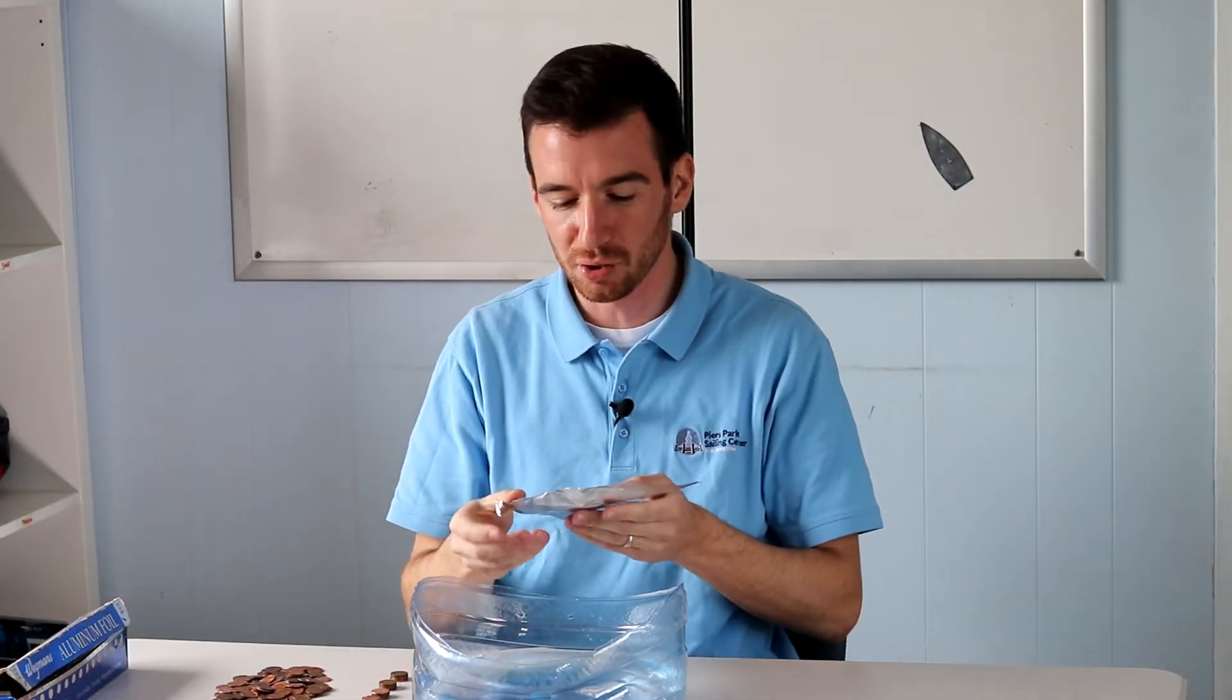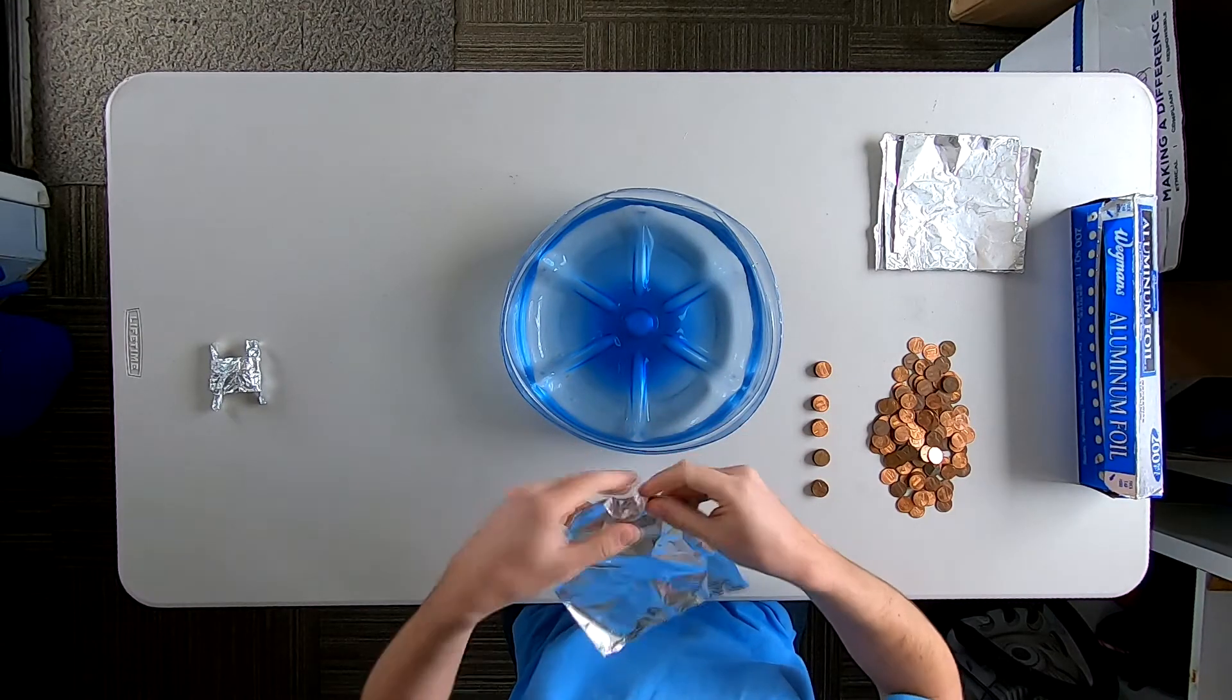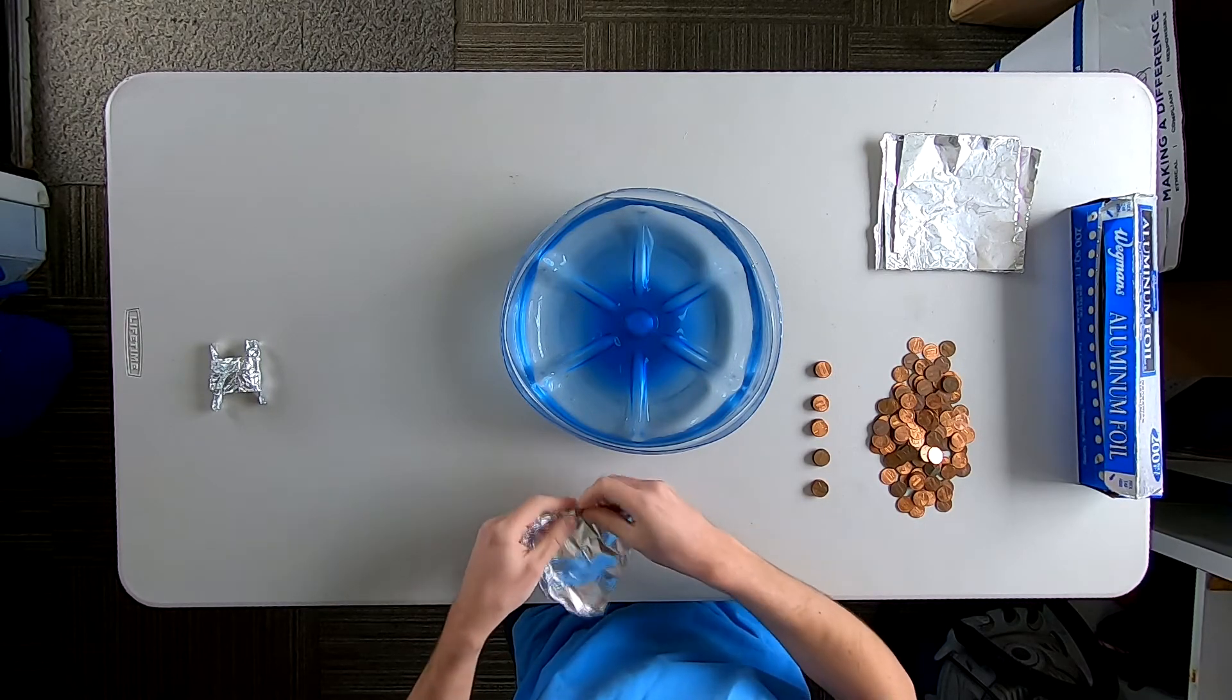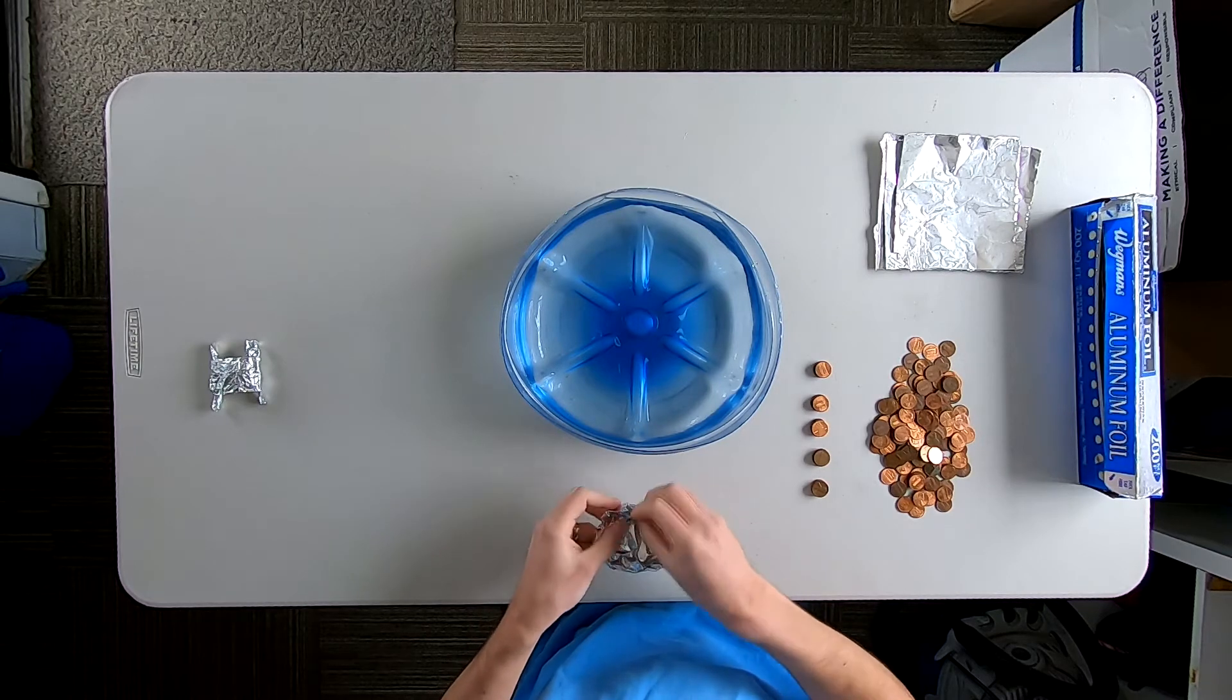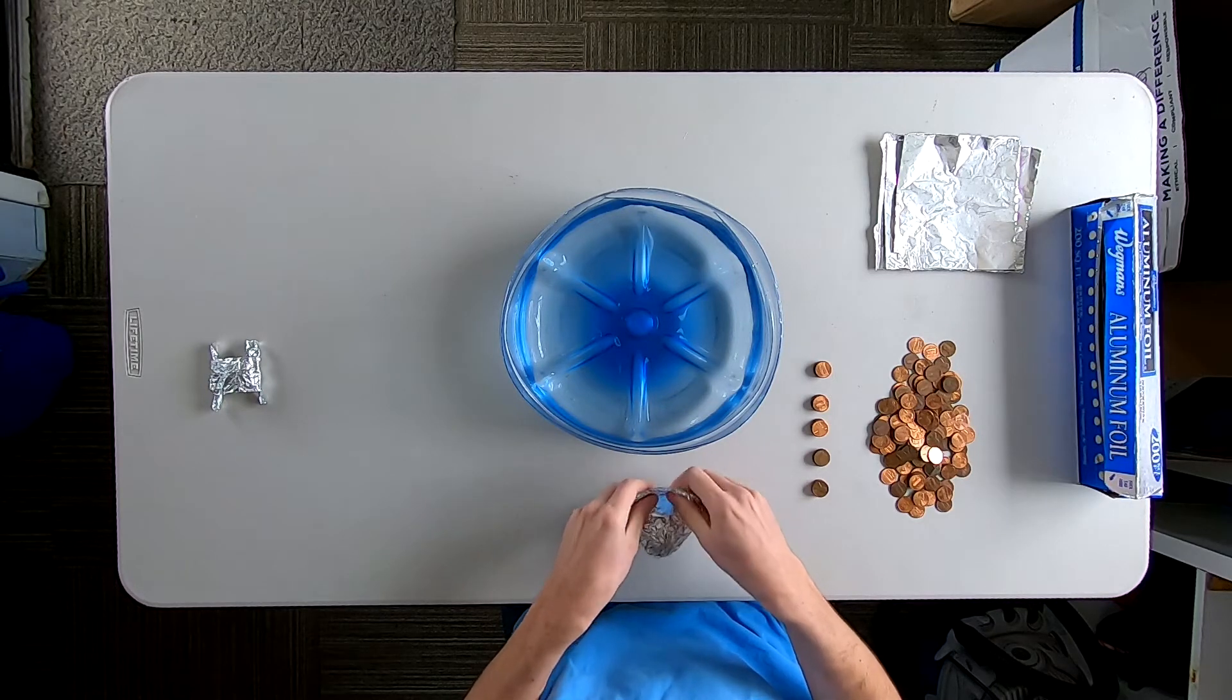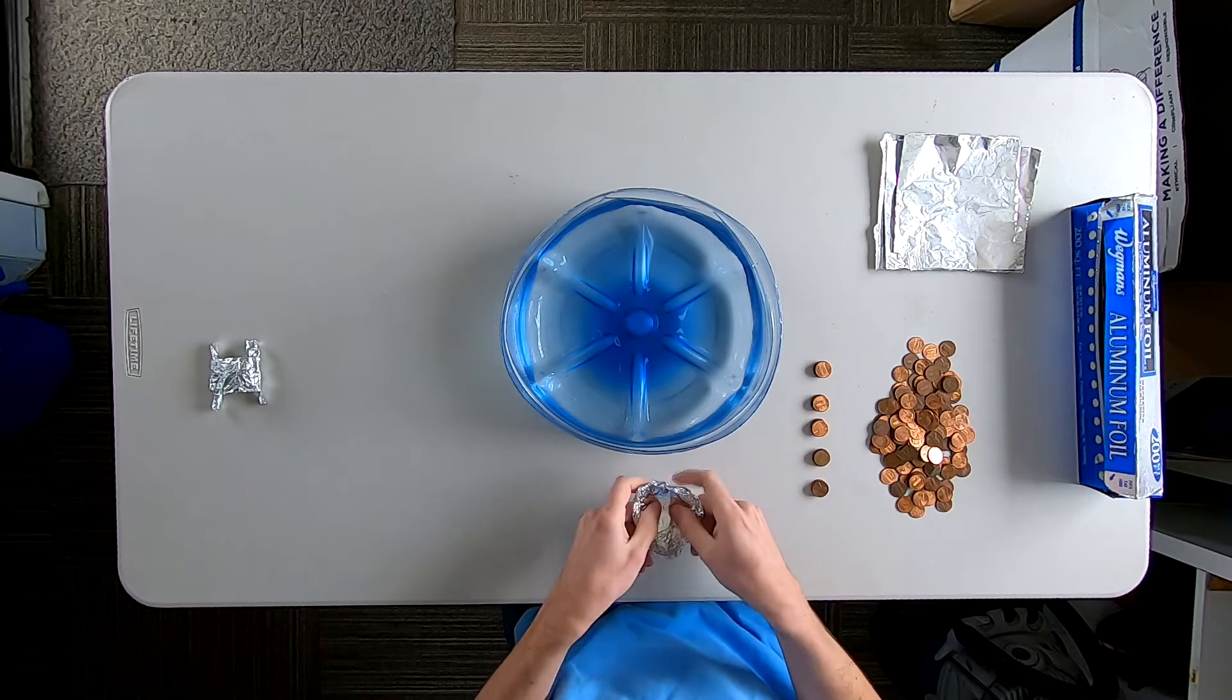Okay, I'm going to try a different design now. I'm going to go with a more traditional boat hull. Roll it up on the sides. Like a transom in the back. This is definitely going to displace a lot more water, so I think it's probably going to hold a lot more than two pennies too.